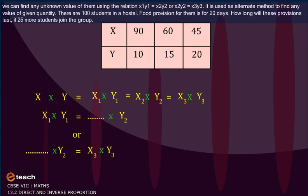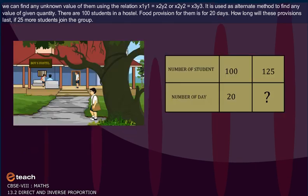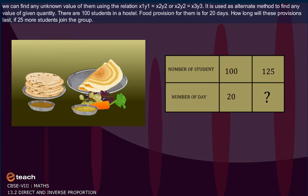We can find any unknown value of them using the relation x1 y1 is equal to x2 y2 or x2 y2 is equal to x3 y3. It is used as alternate method to find any value of given quantity. There are 100 students in a hostel. Food provision for them is for 20 days. How long will these provisions last if 25 more students join the group?